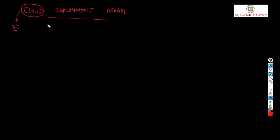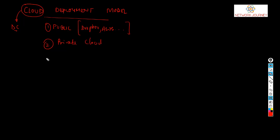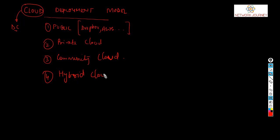There are a couple of deployment models. The first is public cloud. Examples include Dropbox and AWS. Big brands like Dropbox, Microsoft OneDrive, and others have data centers in various locations — US, Australia, Singapore, India, Africa — with their own network medium connecting data center to data center, including rack services, routers, switches, servers, storage units, and firewalls.